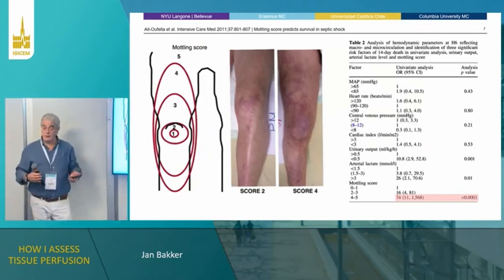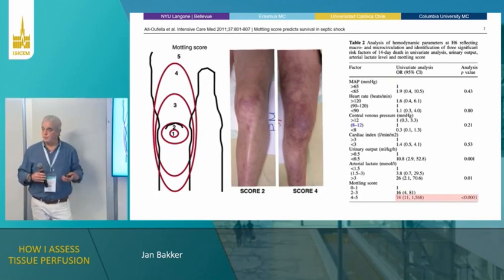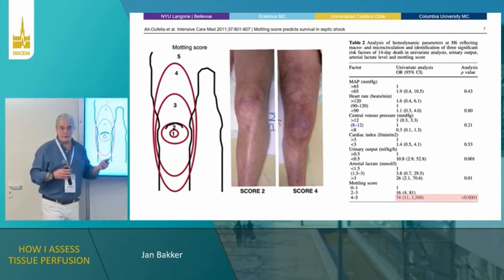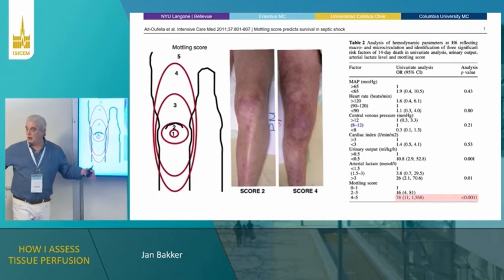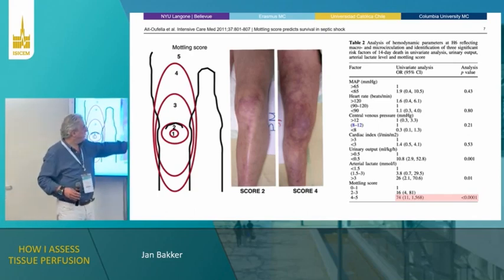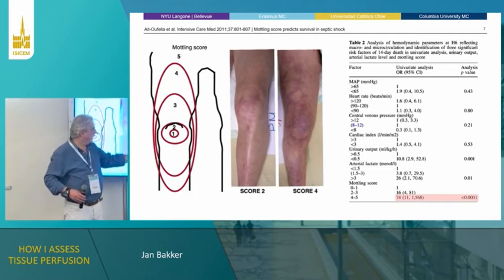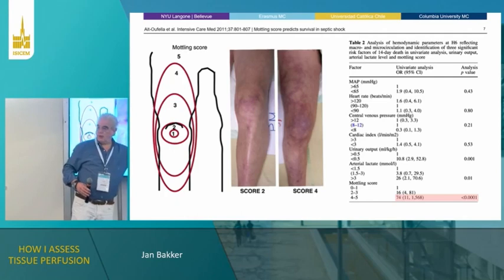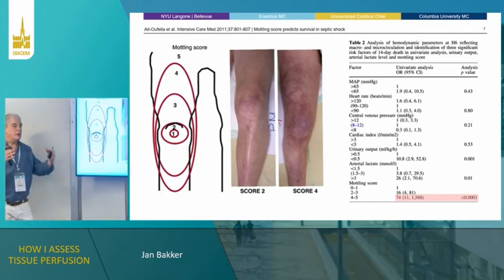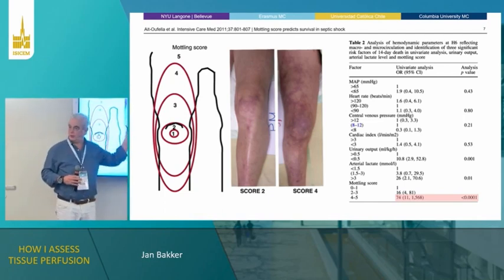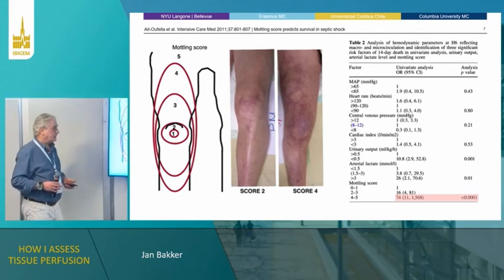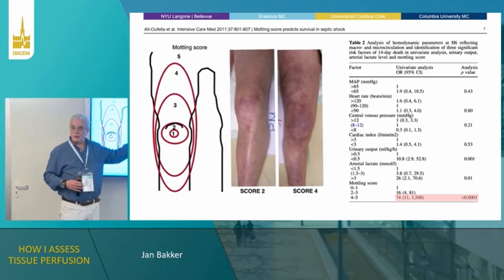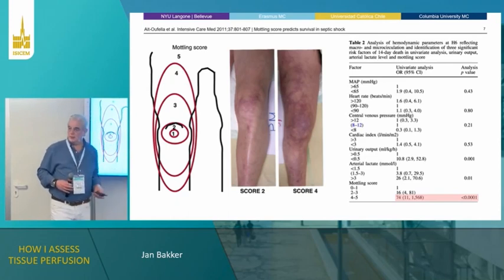If you want an idea of what you're dealing with, there's a study from Ait-Oufella using a mottling score — basically measuring how extensive the mottling is, whether it's only the knee or the whole leg. If the majority of the leg has this coloration compared to only the knee, there is a 74-fold increase in mortality. Realizing that a patient with full-leg mottling is completely different from one with only knee mottling gives you severity, not diagnosis.